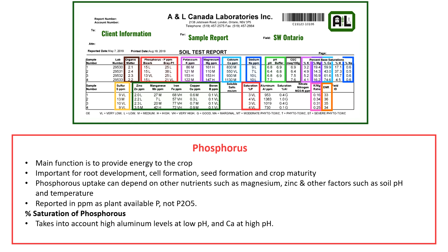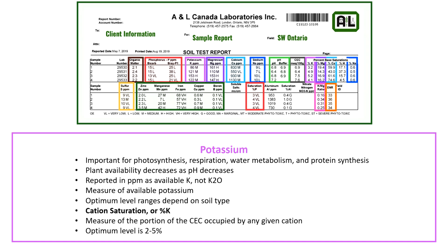The next thing we see is phosphorus. Its main function is to provide energy for the crop. It is important for root development, cell formation, seed formation, and crop maturity. Phosphorus uptake can depend on other nutrients such as magnesium and zinc, and other factors such as soil pH and temperature. It is reported in PPM. We also include the saturation percent P, which is an indication of the amount of phosphorus available in the soil, influenced by your CEC, and takes into account high aluminum or high calcium depending on your soil's pH level.